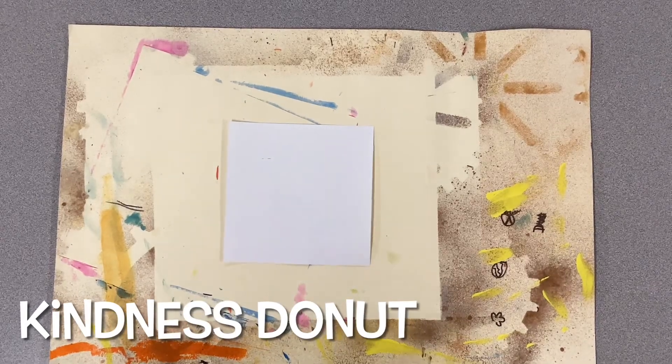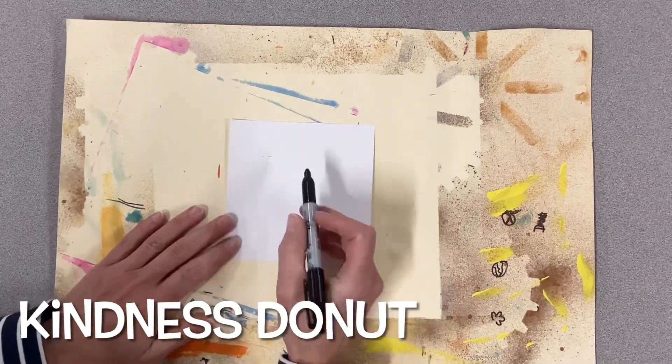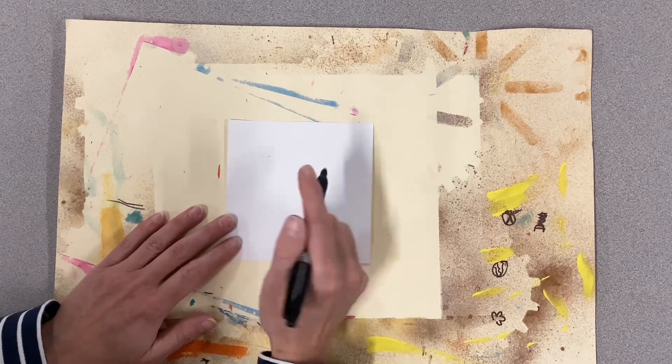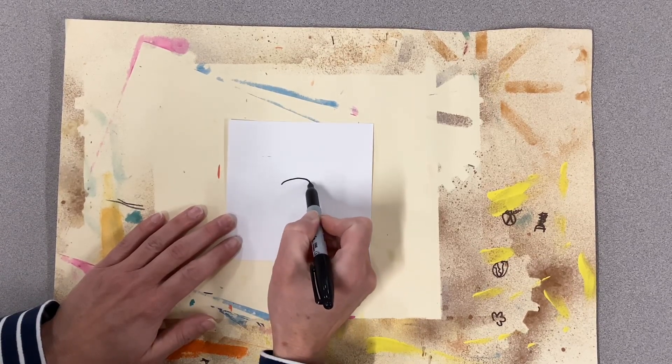Alright, let's start off with our donut. We're going to start off with the center of the donut, the hole part. Right in the middle of the paper, I would like to see you do an oval.